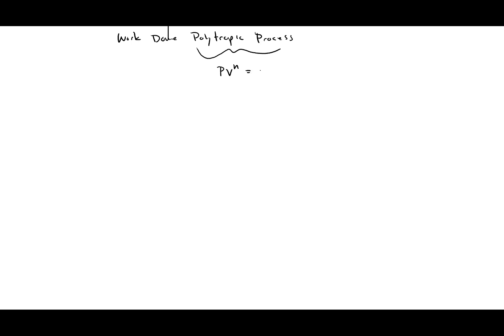So PV to the N is equal to a constant, which I'll just call C. N and C are constants. So basically, if gas follows this relation, it's referred to as a polytropic process.